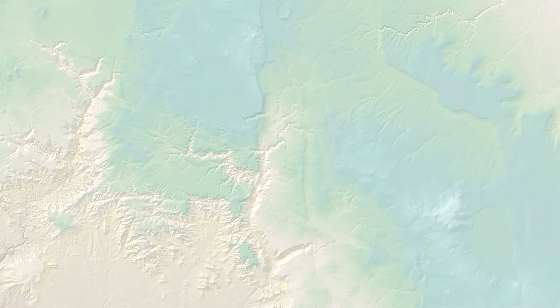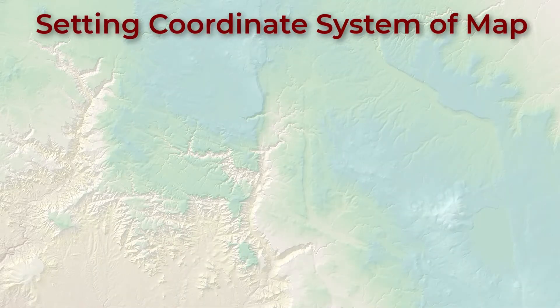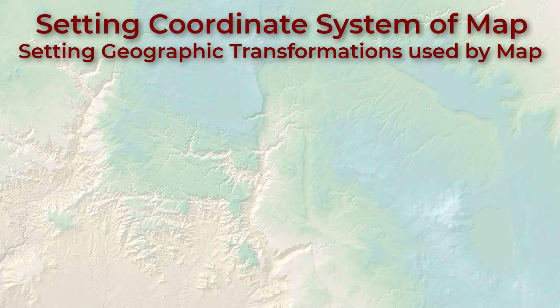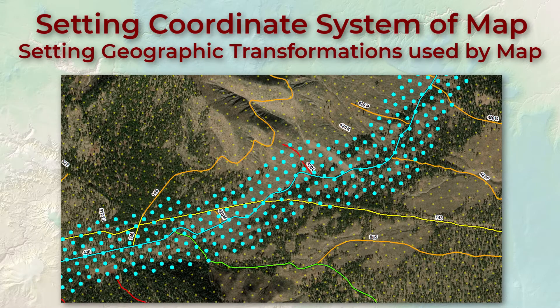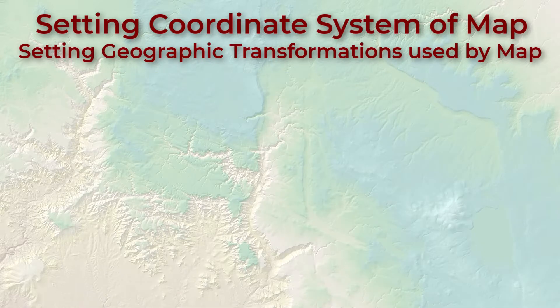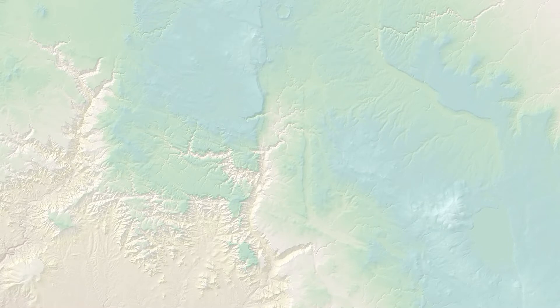In the last video, we saw how to set different projections and geographic transformations in ArcMap so that visually the data line up correctly, and this is useful for some types of analysis like performing spatial selections and for making accurate maps. But now we'll look at how to actually project your data sets into new coordinate systems so that all your data line up correctly without any additional required transformations in your map. This is a more reliable way to be sure that ArcGIS is performing the analysis in the way you expect and using the coordinate system you want it to use.